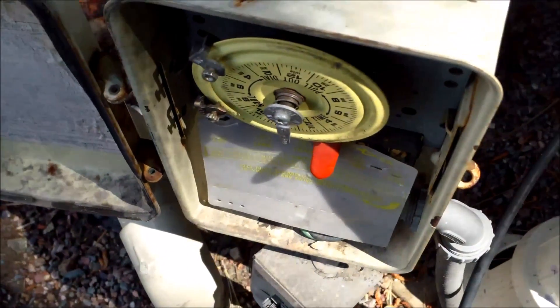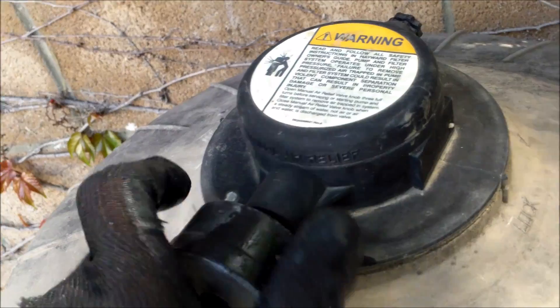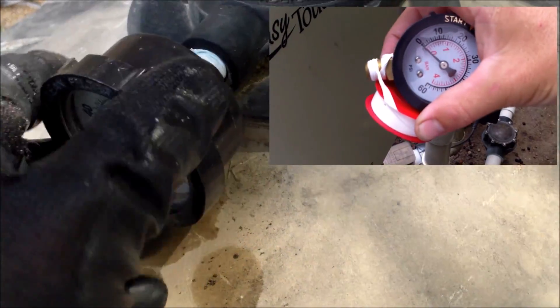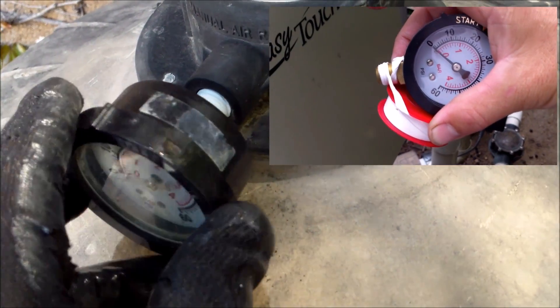Make sure you turn the pool filter off. So changing out a broken pressure gauge is very easy. Go ahead and remove the old pressure gauge. Simply put some Teflon tape on the new one and go ahead and thread the new one into the filter.